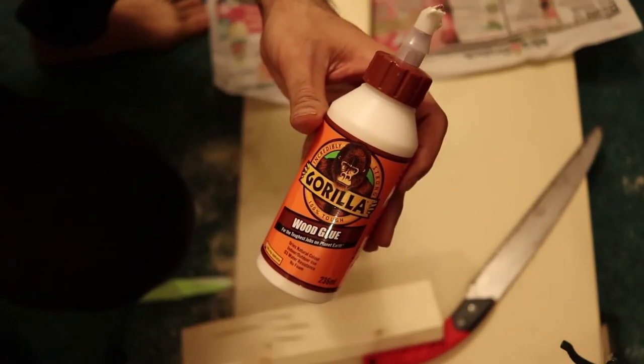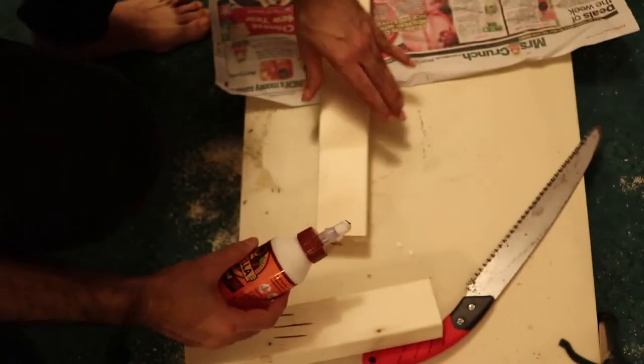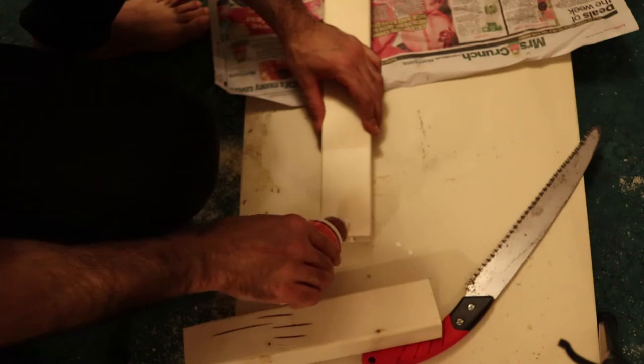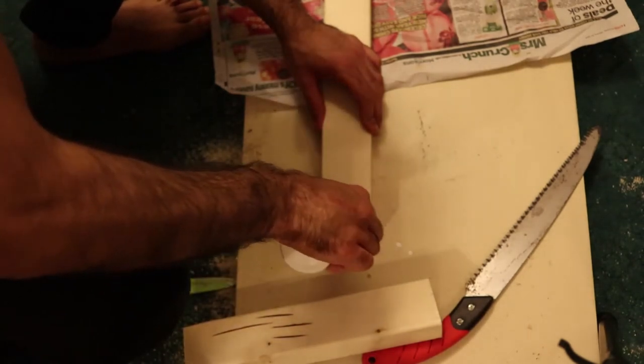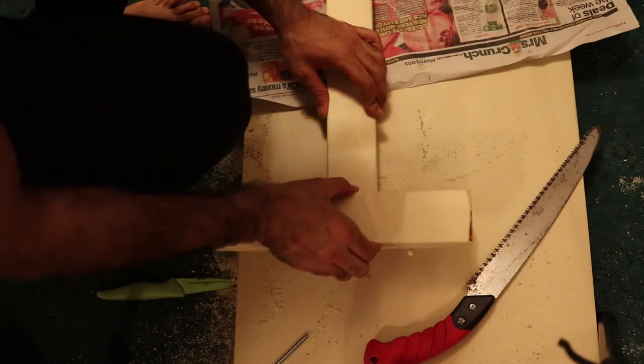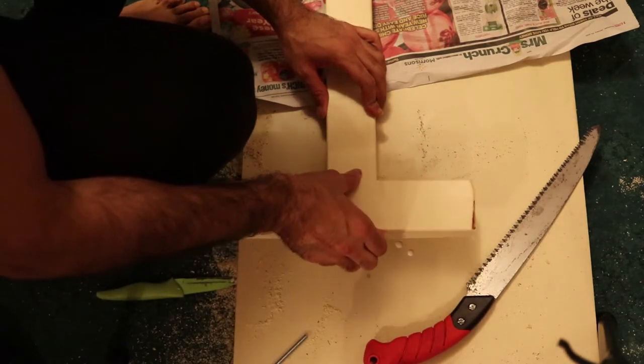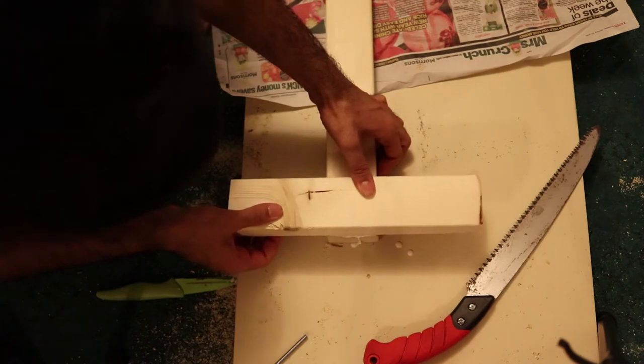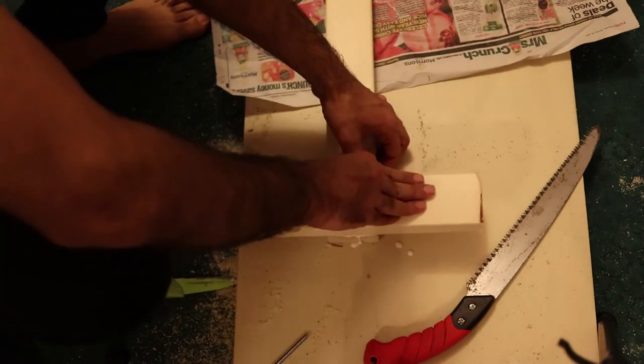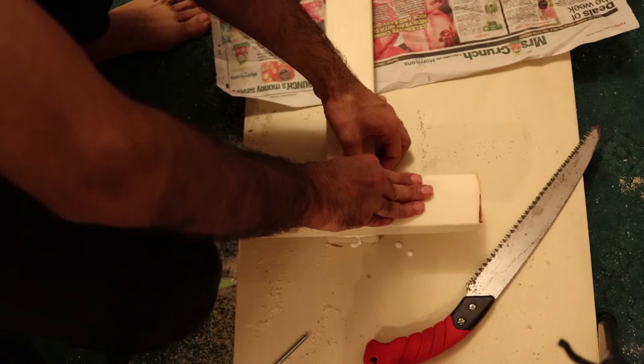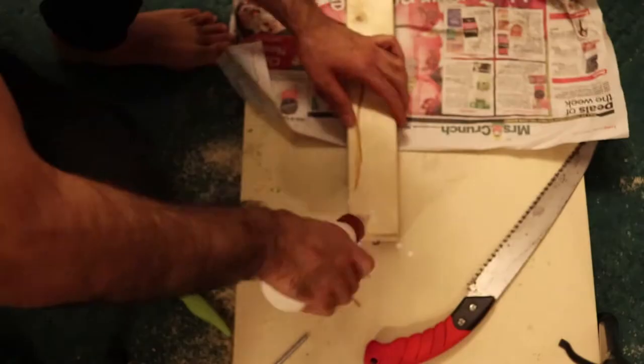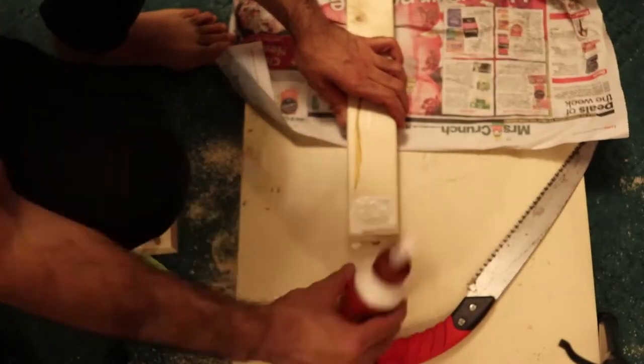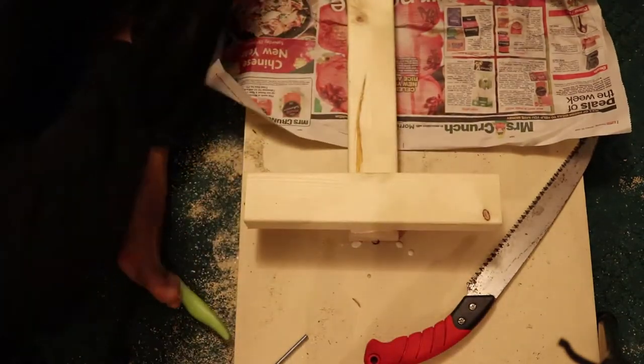Now we need some gorilla wood glue, put it on one end, just like that. Now take the base of the foot and put it on that glue and press it hard and make it so that the bottom would be flat. Now repeat the same thing with the other base of the foot for the other foot.